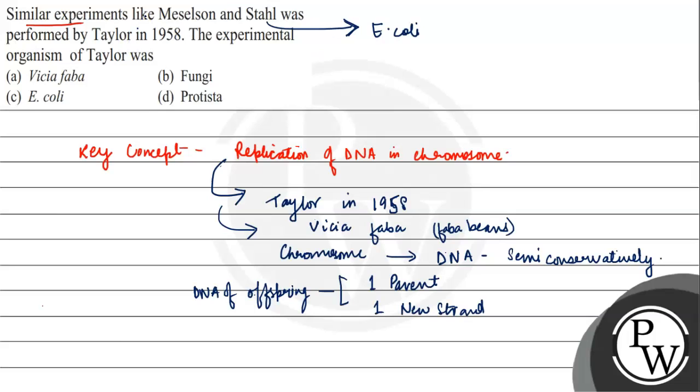Wahi, similar Taylor, similar experiment Taylor ne carry out kiya along with several other scientists in 1958. The experimental organism of Taylor was Vicia faba.